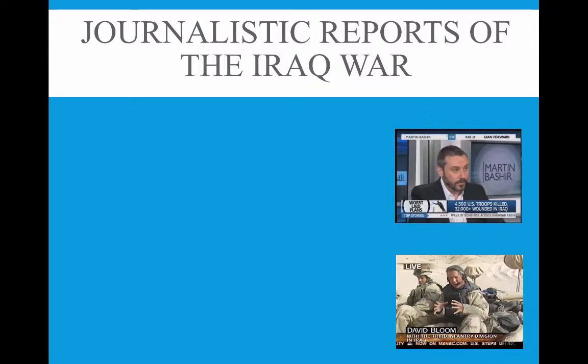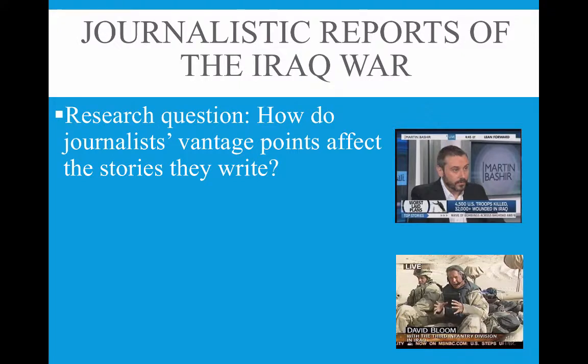An example from the chapter involves embedded journalists during the Iraq War. The US military introduced a program where journalists covering the war could be embedded with military units — they dressed like soldiers and lived with them. Researchers were interested in how this vantage point could affect the way reporters write their stories, asking: how do journalists' vantage points affect the stories they write?